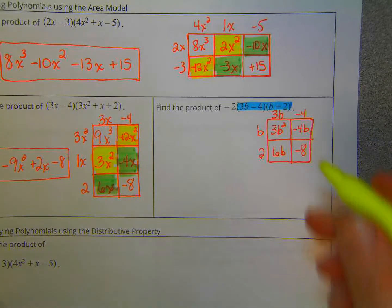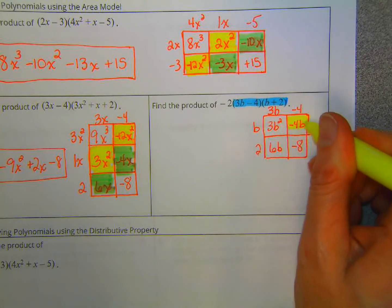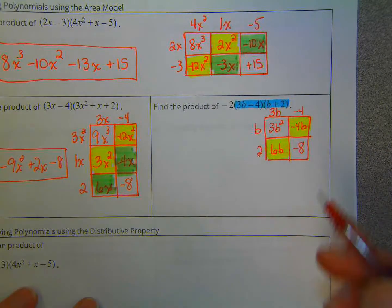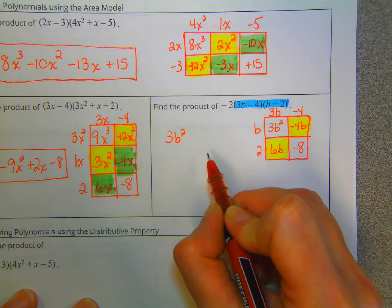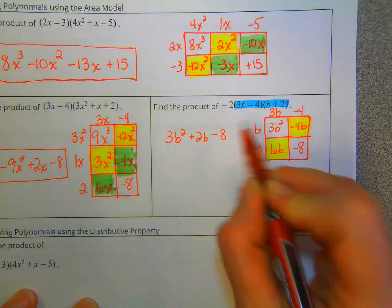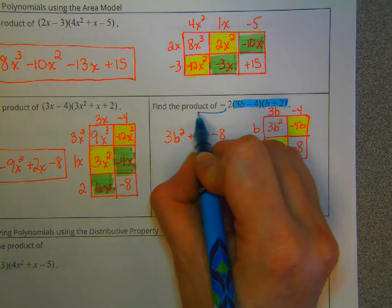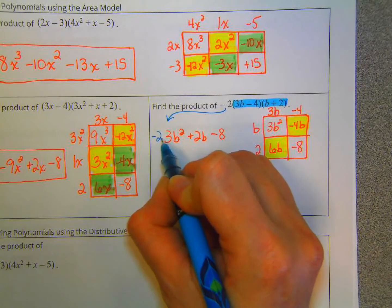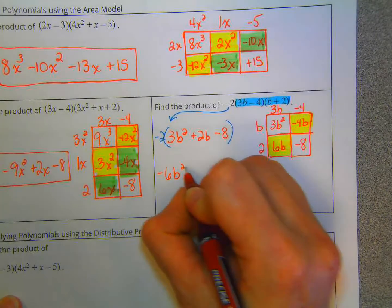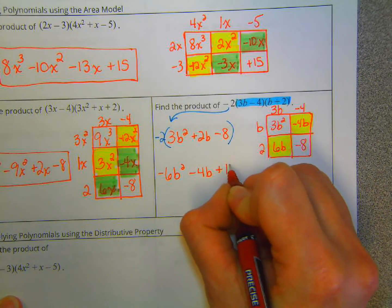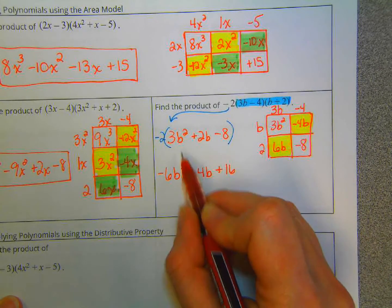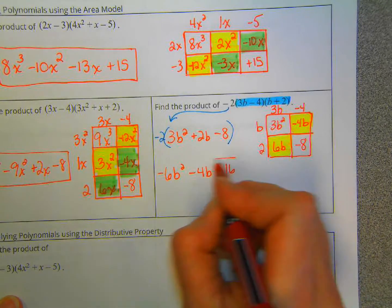And looking at our like terms. So we have 3b squared. Those two together. Negative 4 plus 6 is positive 2b. Minus 8. However, let's not forget. We've got negative 2 to multiply by that whole thing. So that gives us negative 6b squared. Minus 4b. Plus 16. Negative 2 times 3. Negative 2 times positive 2. Negative 2 times negative 8. And don't forget your b squared and your b. This would be your final answer.